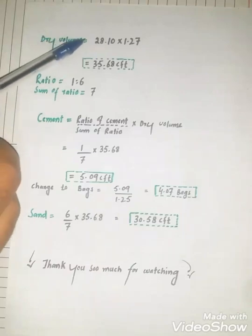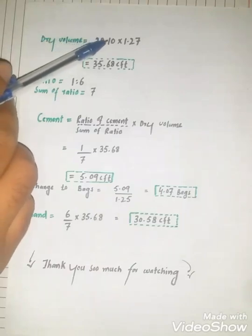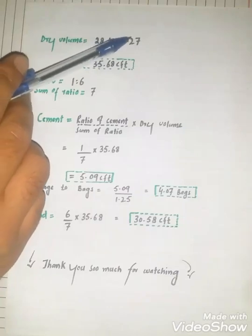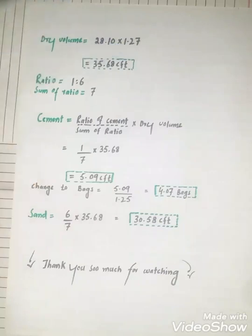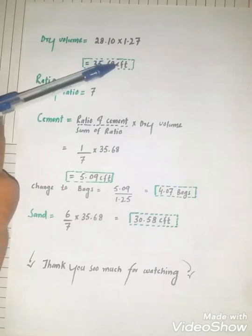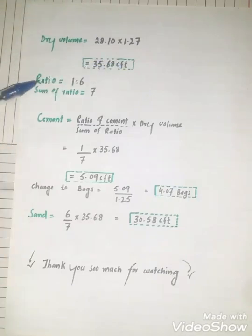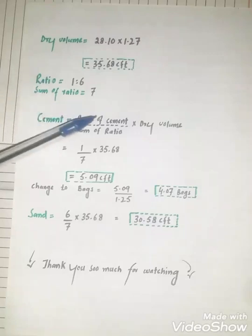Dry volume of mortar is 28.10 multiplied by 1.27, this is dry factor for mortar. Dry volume of plaster is 35.68 cubic feet. Ratio used: 1 ratio 6. Sum of ratio is 7.